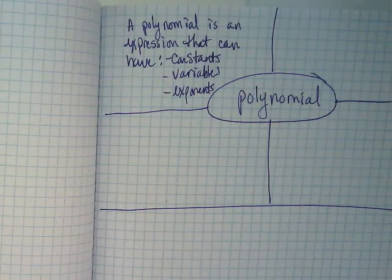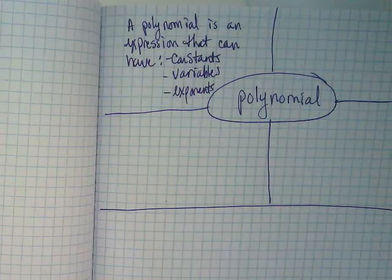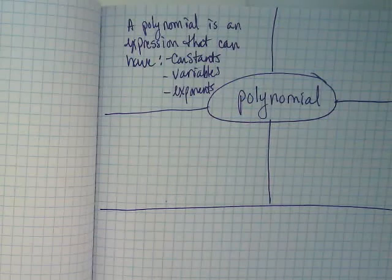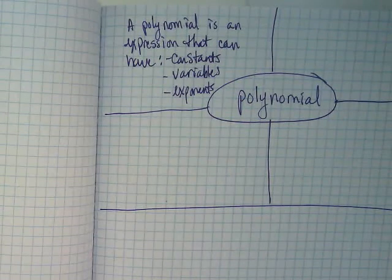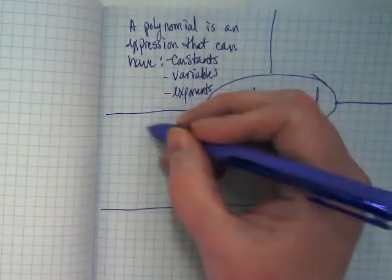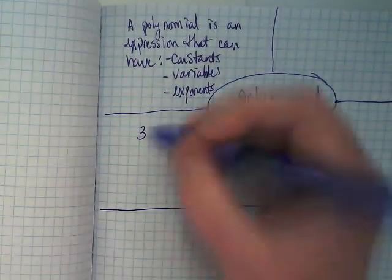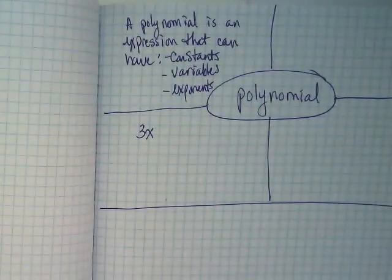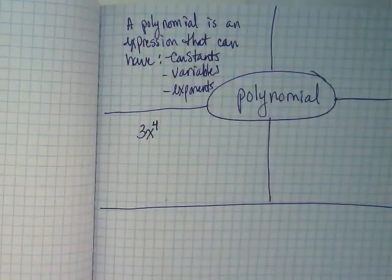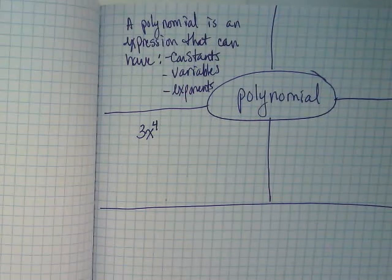Who recalls what a constant is? This also can be known as a coefficient if it's connected to a variable. The number three would be considered a constant. X is a variable. To the fourth power is an exponent. This is an example of a polynomial.